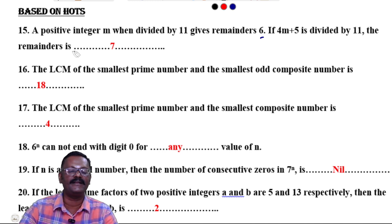Question 16: The LCM of the smallest prime number and the smallest odd composite number is 18. Question 17: The LCM of the smallest prime number and the smallest composite number is 4. Question 18: 6^n cannot end with the digit 0 for any value of n.